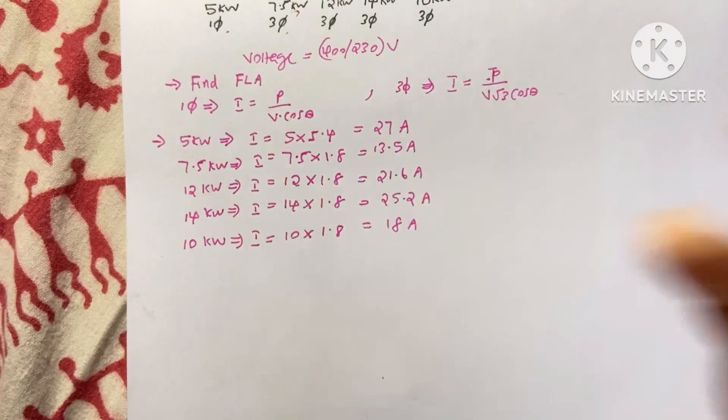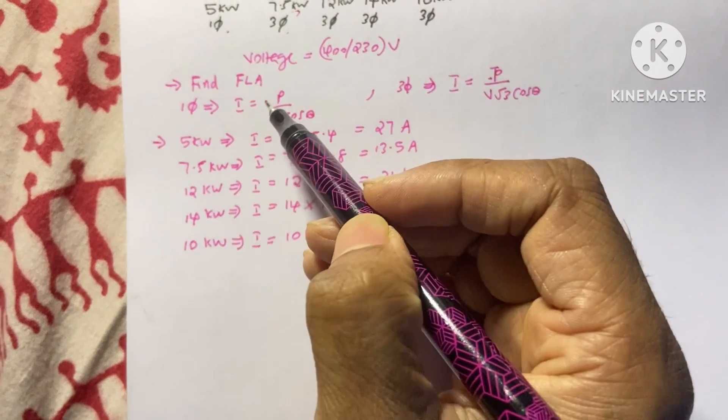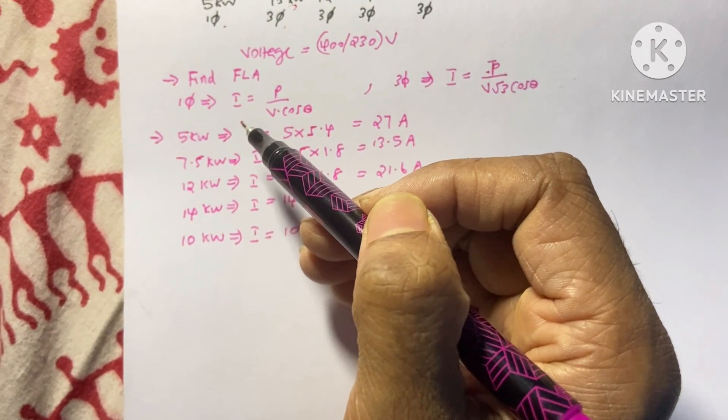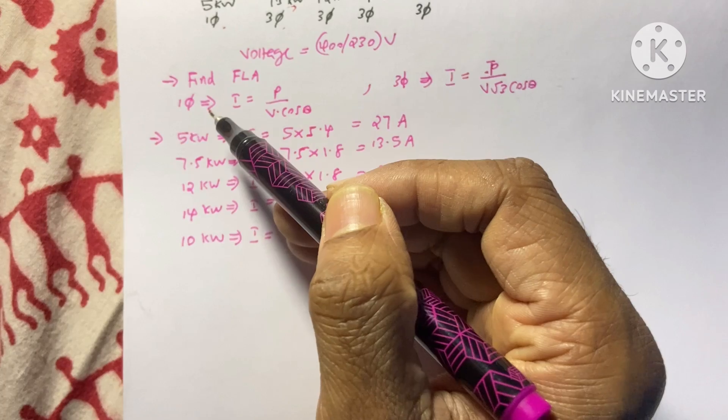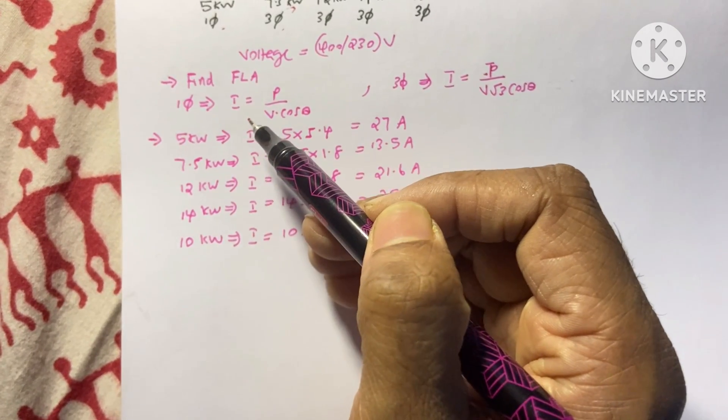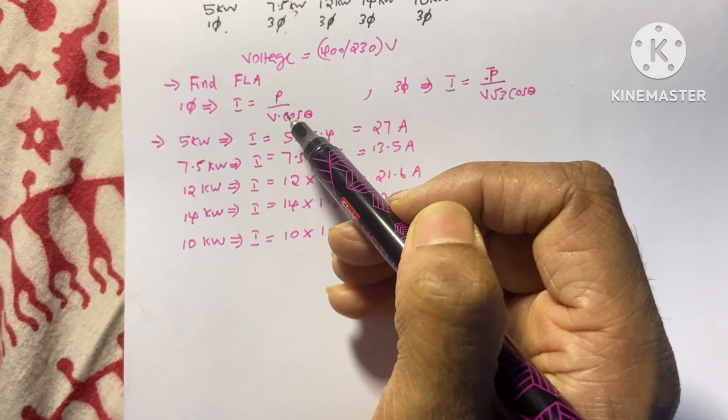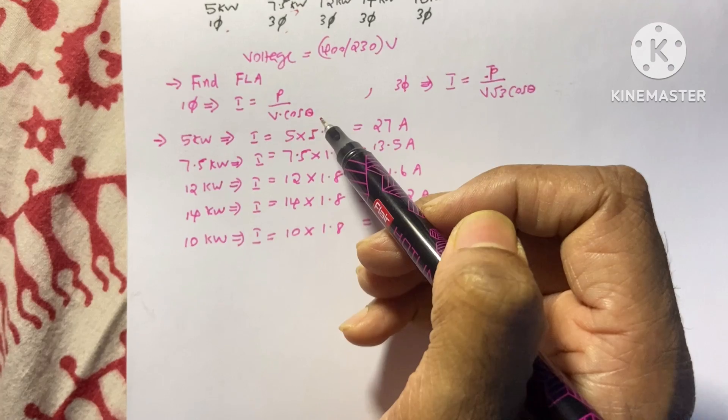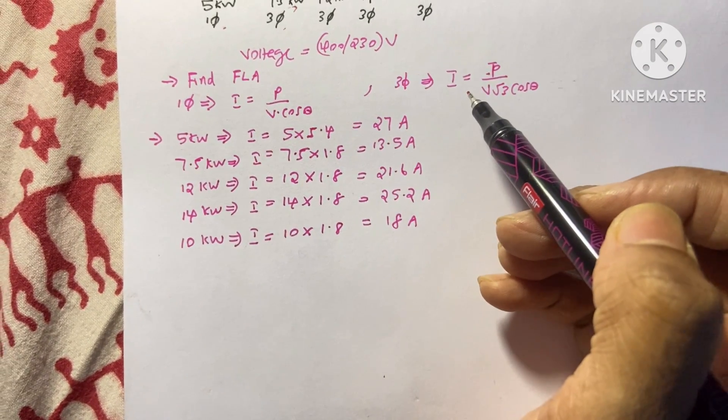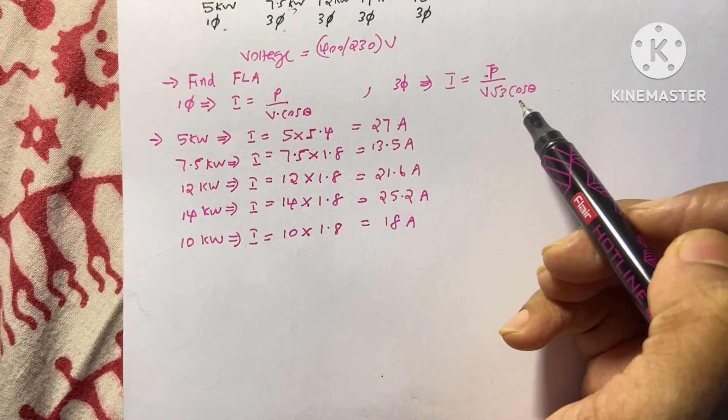First we need to find the FLA, full load ampere, of all these motors. To find the full load ampere for the single phase, the equation is I equals P by V cos theta. For three phase, I equals P by V root 3 cos theta.